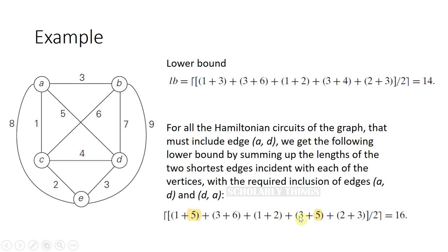Similarly for D, you would initially choose 3 and 4, but since you have to include edge AD, the first two shortest lengths become 3 and 5. When you add up this value and divide by 2, the lower bound will be 16.